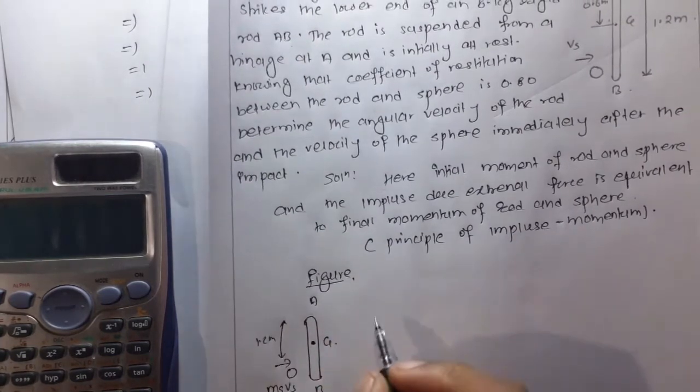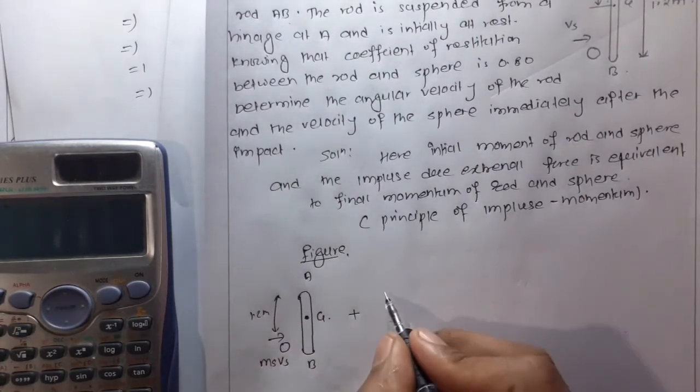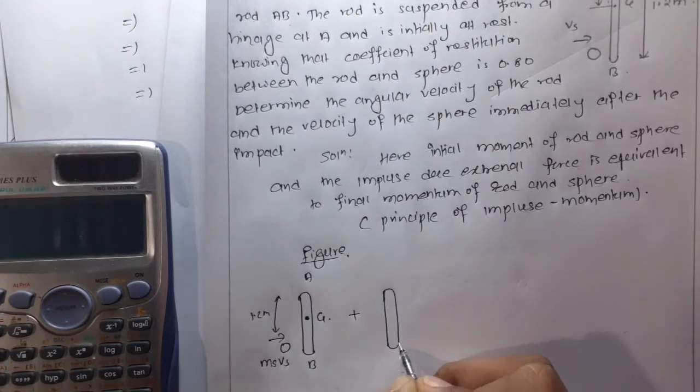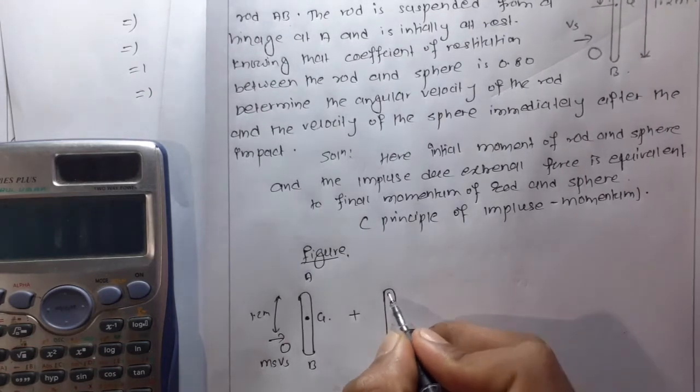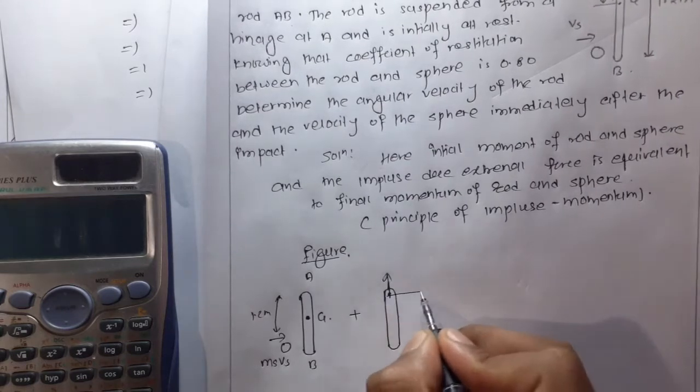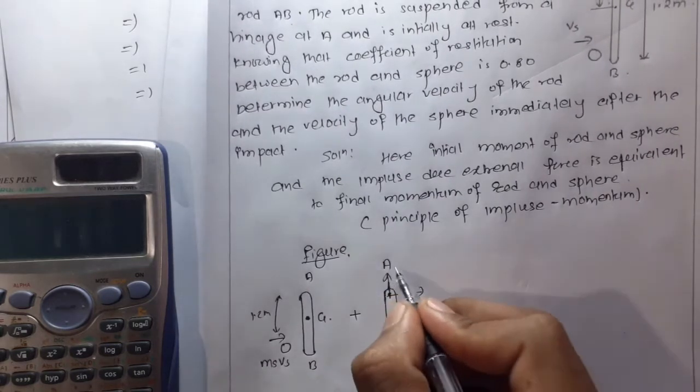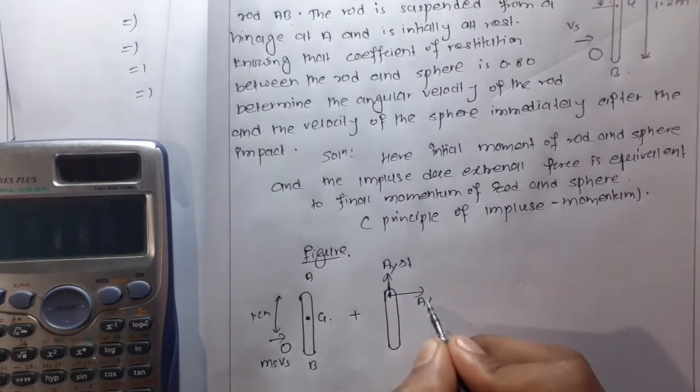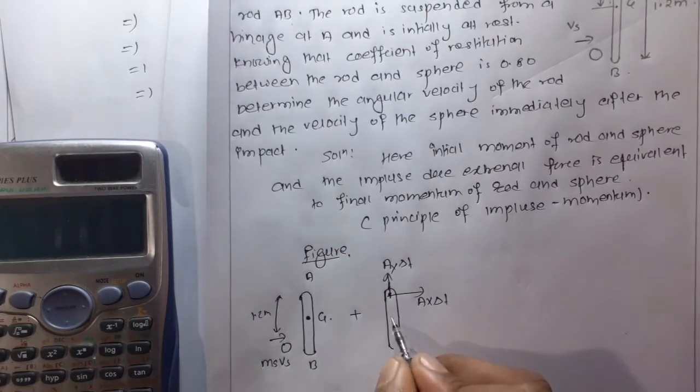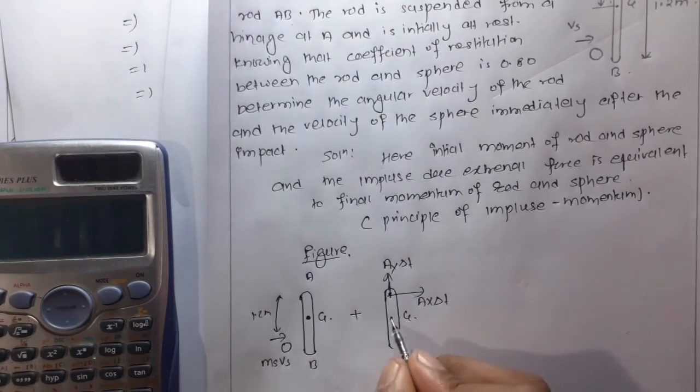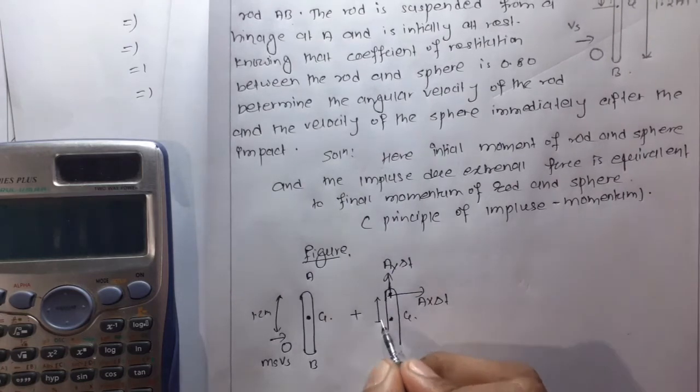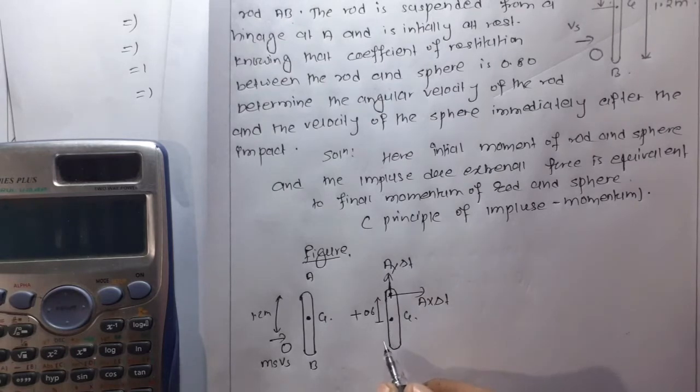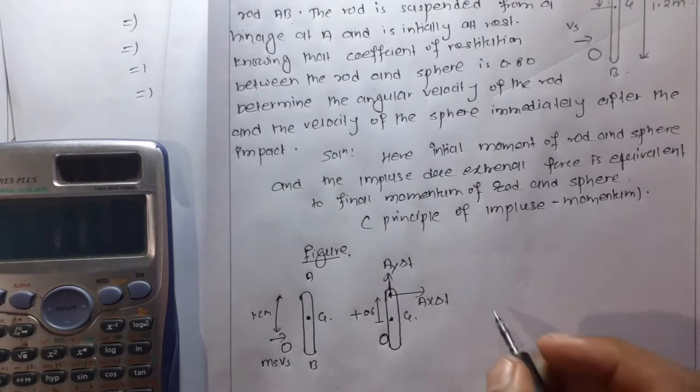First of all, the figure here. We have the rod and particle at impact, with impulses Ay∆t and Ax∆t, and the center of gravity at a distance of 0.6 meters.